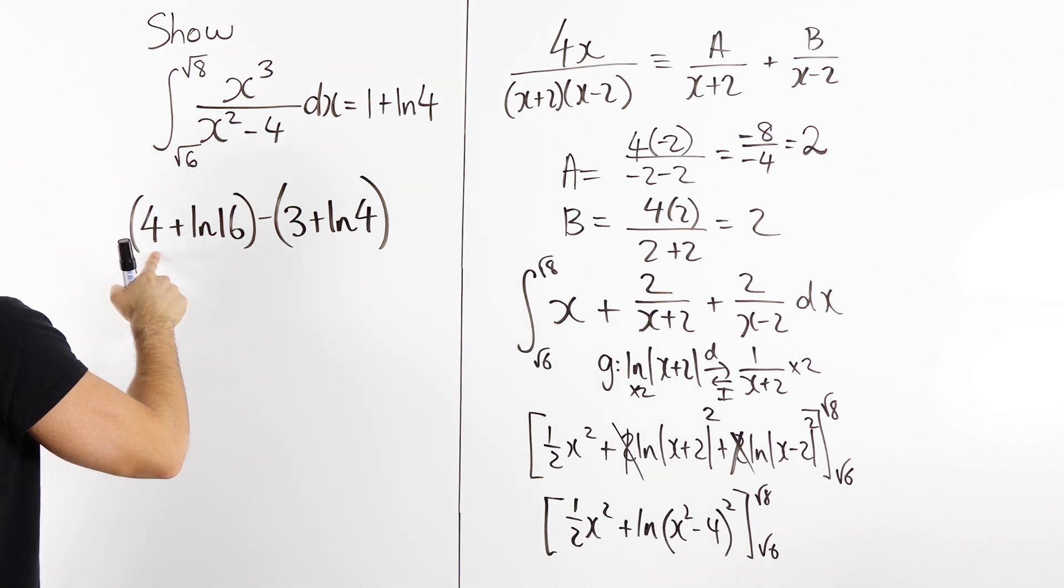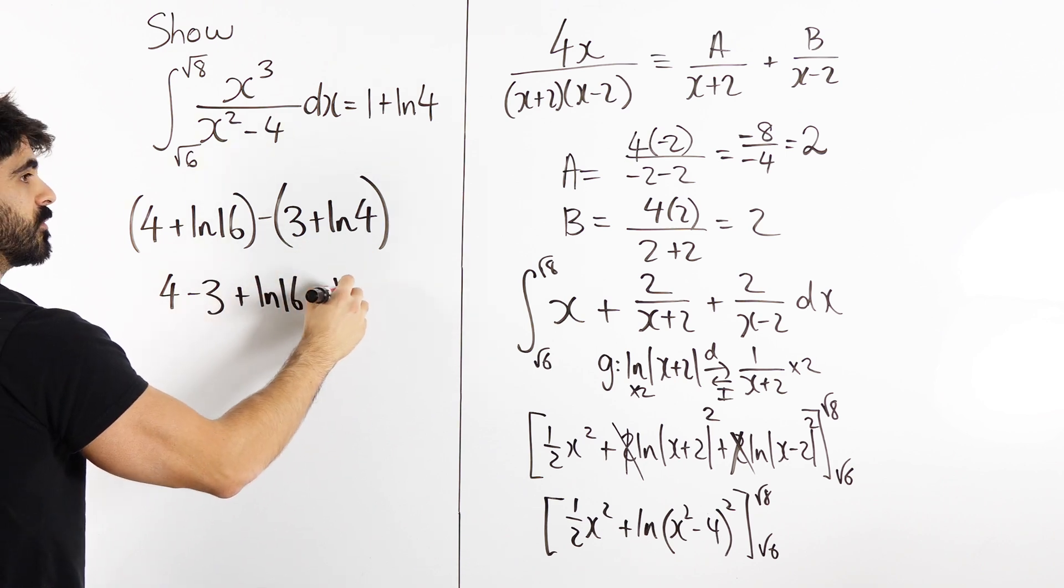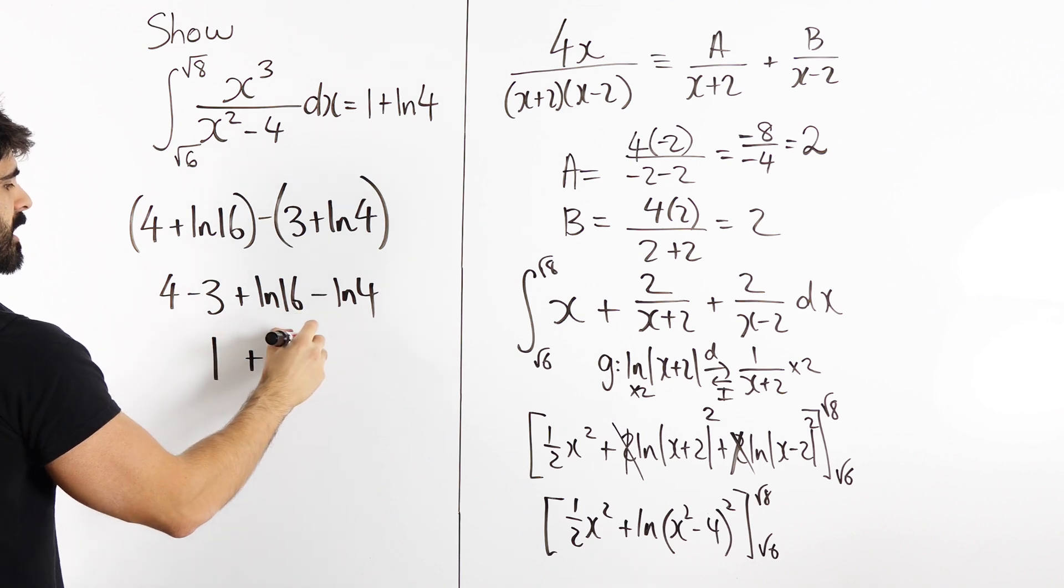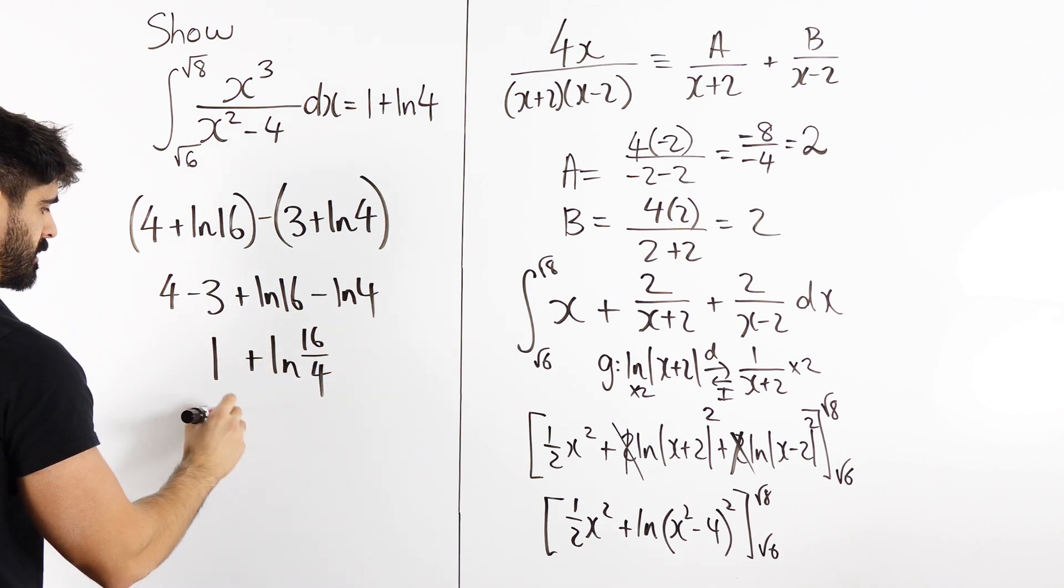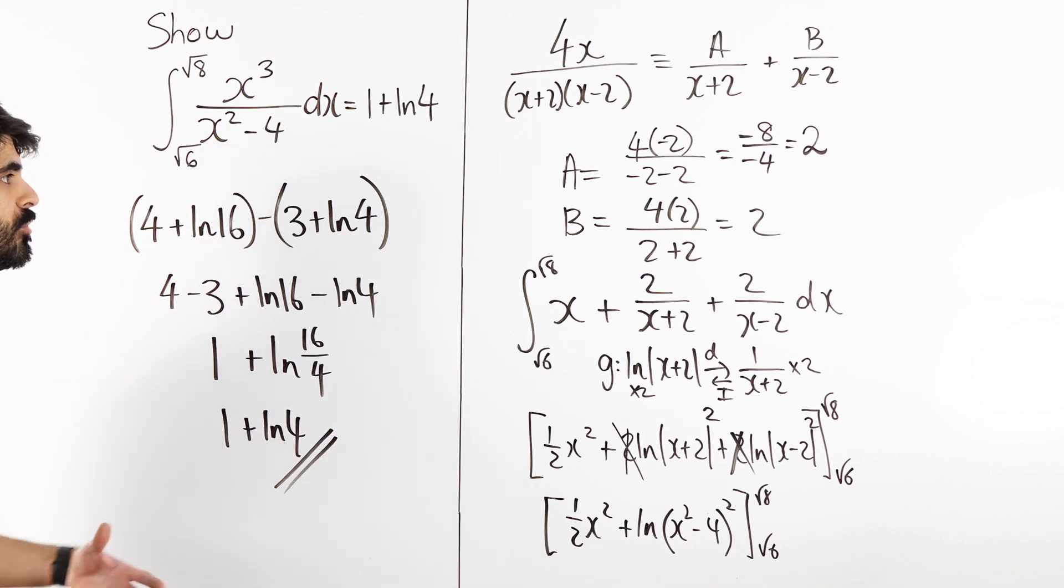So we're left with 4 take away 3, and ln 16 take away ln 4. 4 take away 3 is 1, and then here we're going to get ln, the minus means division. So we have 1 plus ln 4, and that is proved.